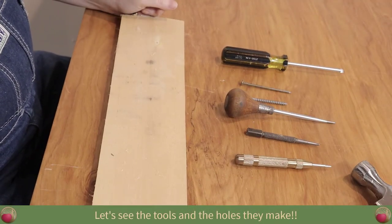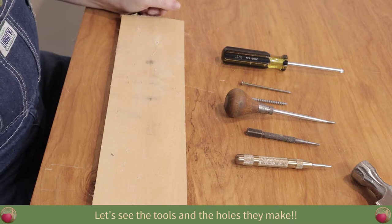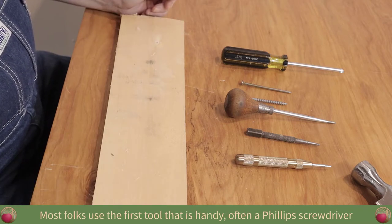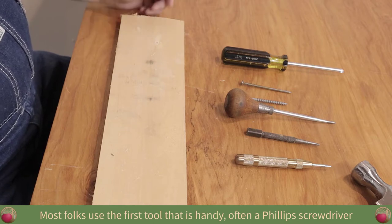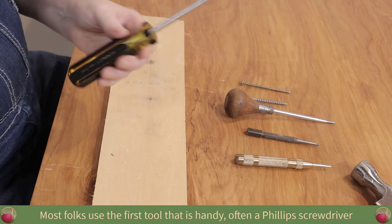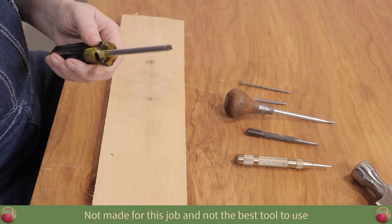Okay, we're going to do a close-up on the bench here so you can see all the tools and the kinds of holes that they make. Now, the thing about making a center punch in wood is most people just use the first tool or whatever they come across to make that hole. And a lot of times that's going to be a Phillips screwdriver. You know, this is really not the best tool to use. And here's why.